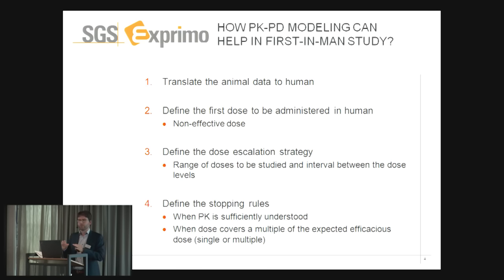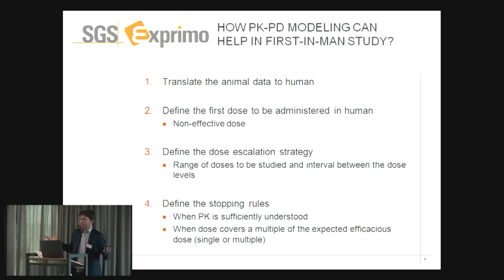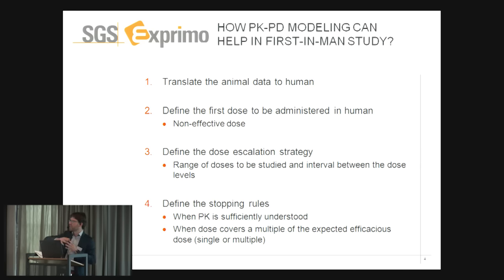Let's focus on phase one. How can modeling and simulation help? It will help you answer the three big questions when you want to design a phase one trial. The first question is to define the first dose — where are you going to start, what is the lowest non-effective dose? It will help you define how you will escalate and how fast. And finally, it will define when you will stop — which is important because if you have a very well-tolerated compound, you might stop at a dose too low to finally have efficacy in patients. Previously, these questions were answered by statistics or by simply upscaling from animal data — and the example I'm going to show clearly shows that this is not always possible.